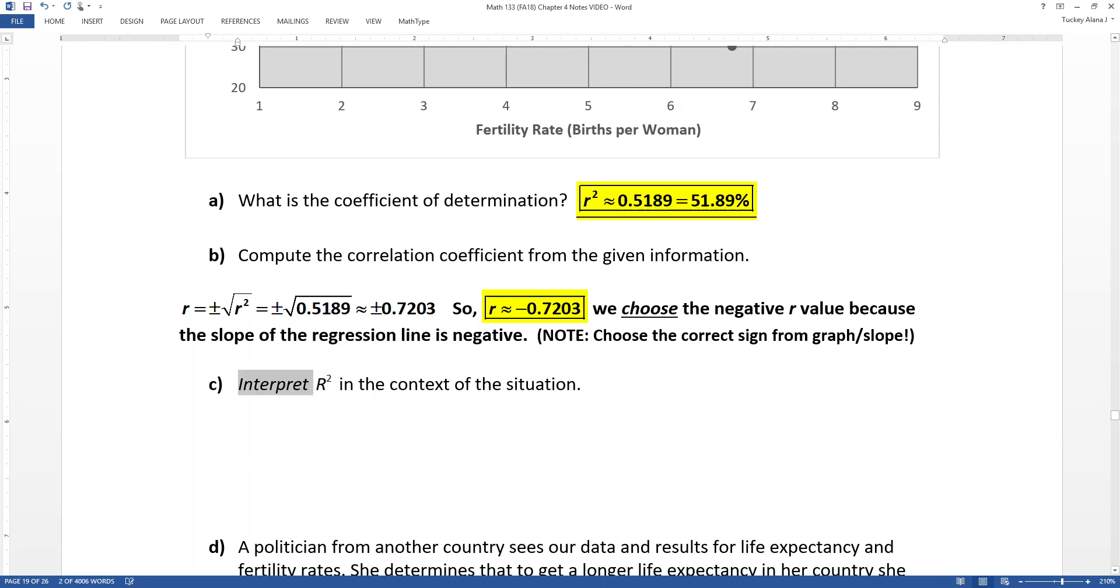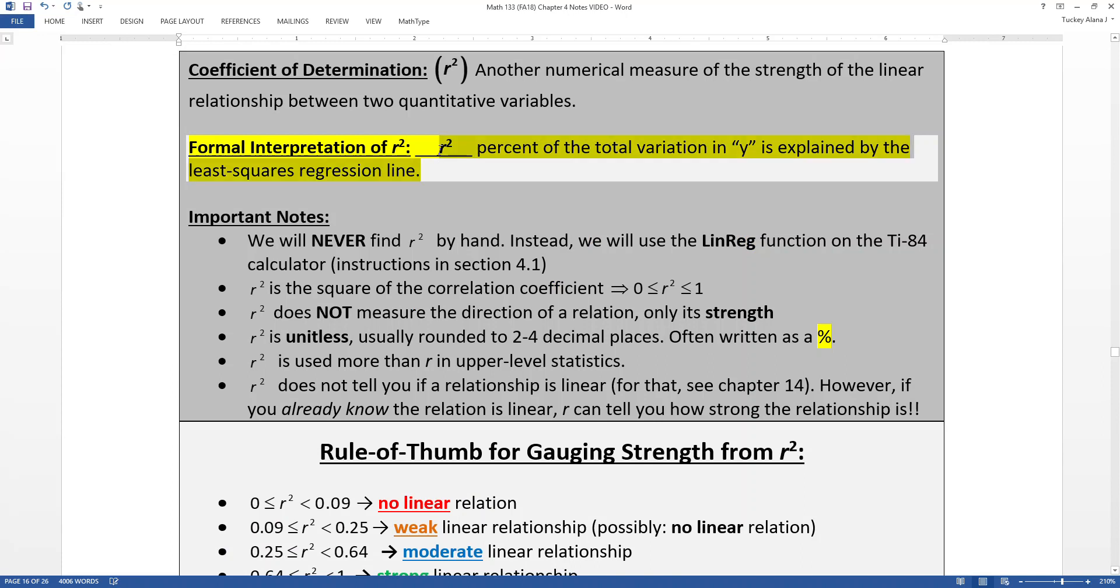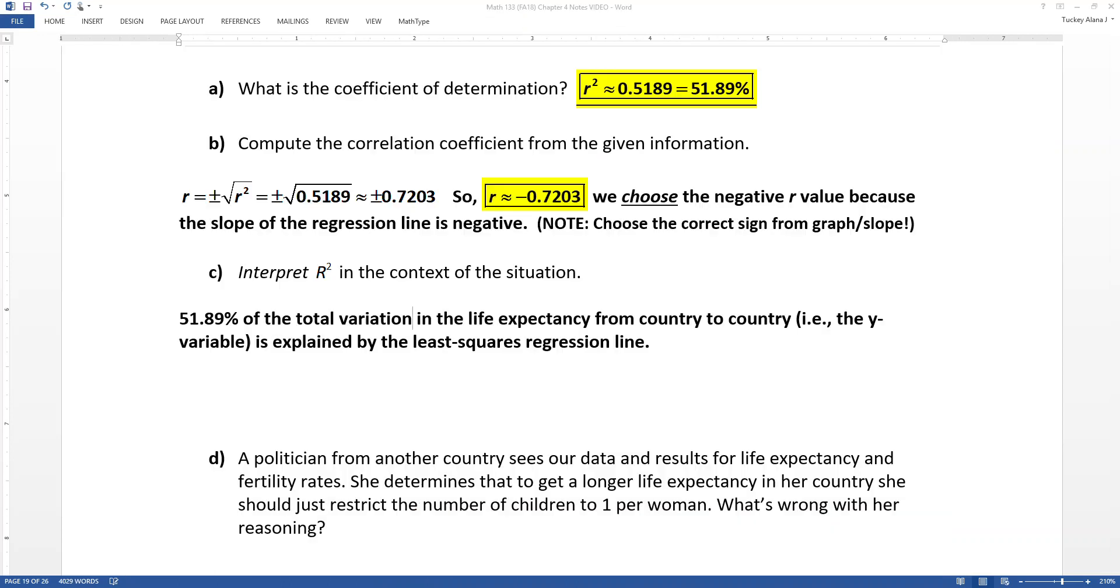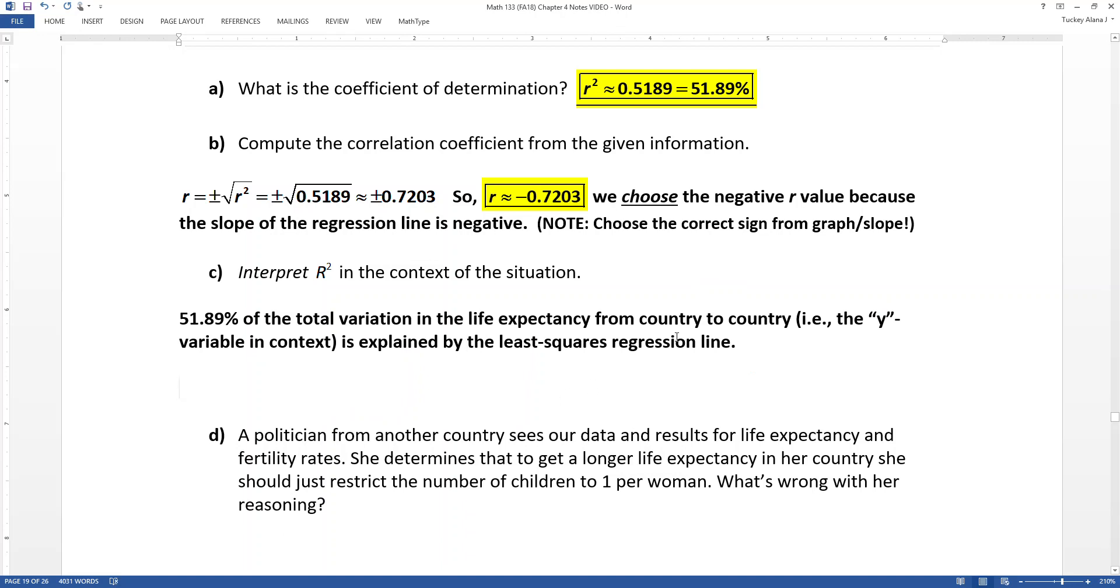All right, now interpreting the R-squared is the phrase that was given to us when we first were introduced to R-squared, which is right here, that we use R-squared percent of the total variation in, quote, Y, end quote, which we will explain that in context. We're not going to leave a letter like that. It's explained by the least squares regression line. So that leads us to this interpretation. 51.89% of the total variation in the life expectancy from country to country, in other words, the Y variable. So I'm explaining the Y right there with context. It's explained by the least squares regression line, or the line of best fit.